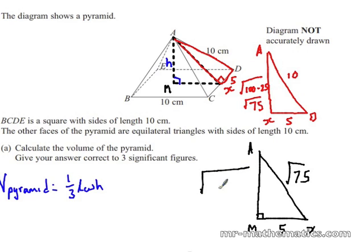So the height will be the square root of root 75 squared minus 5 squared which is 25. So it will be the root of 50 which is about 7.07. So now we will go back to our volume.